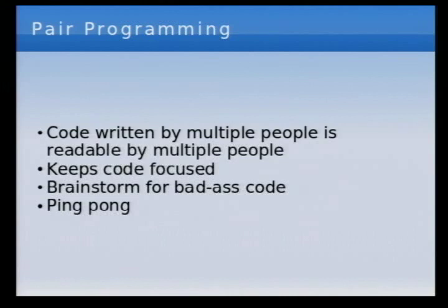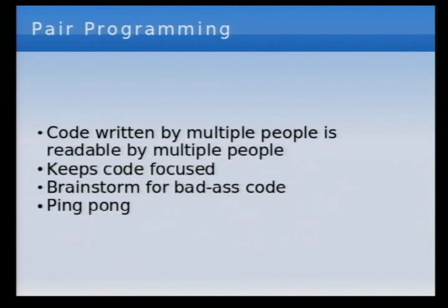Pair programming is the most controversial part of XP for some reason. Basically, two people program at the same time — we'll show you in the demo, it's a lot easier to show than to describe. Pair programming is like a constant code review. Code written by one person is readable by one person; code written by two people is readable by at least two people. How many people have worked on an open source project where somebody contributes a big chunk of code and you can't read it — so you throw it away and rewrite it from scratch? That's a huge waste of time.